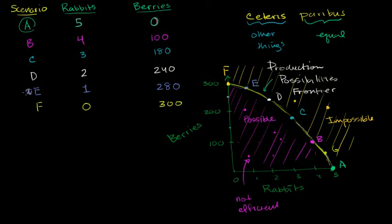Let's say we've been hanging out in Scenario E for a bunch of days. On average, we've been catching one rabbit but gathering 280 berries. We were in a berry mood. So this is Scenario E right over here. But now, all of a sudden, we're in the mood for more protein. We are in Scenario E, and we're in the mood for more protein.